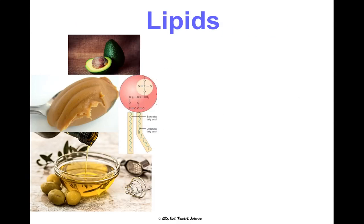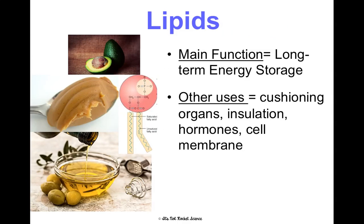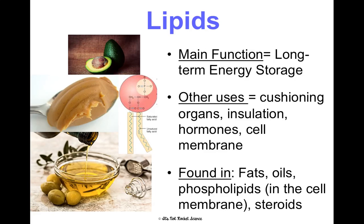Let's talk about lipids. The main function of a lipid is long-term energy storage, but they're also used to cushion your organs, to insulate you, to make hormones in some senses, and to make up the cell membrane, which we'll talk about a lot in our cells unit. Lipids are found in fats, oils, phospholipids — which make up the cell membrane — and even steroids. They're not just fats and oils, and they're not just bad fats. They're good fats too, like what you find in avocado.